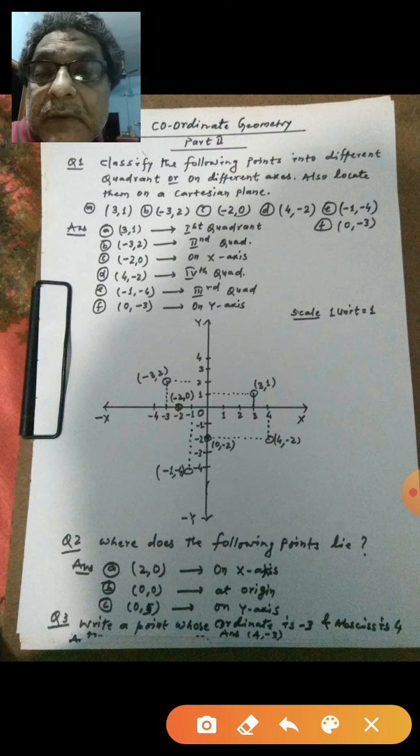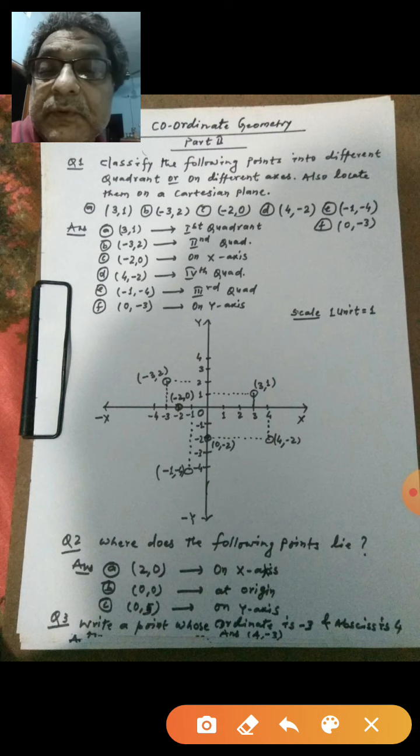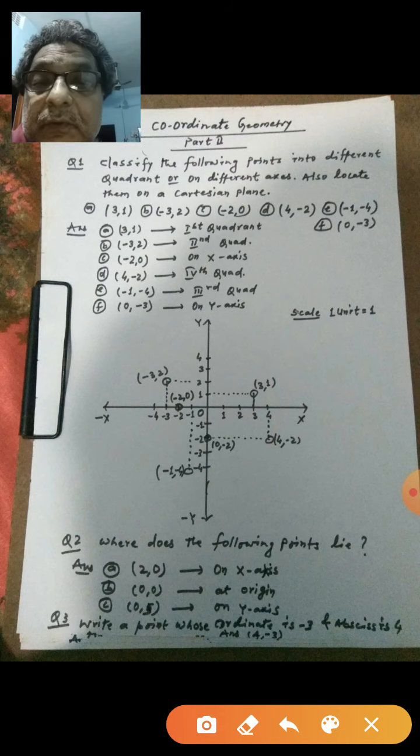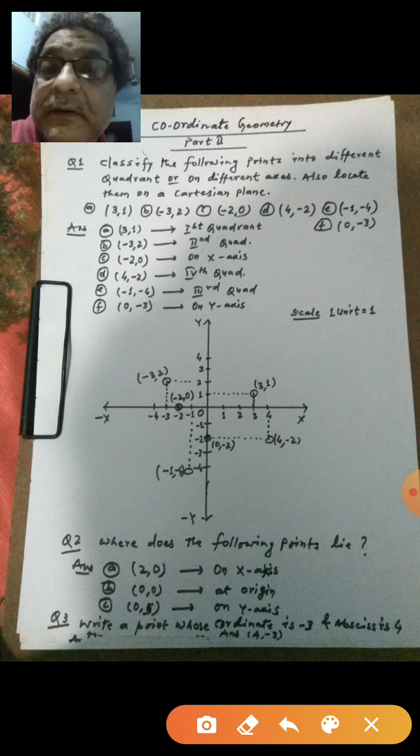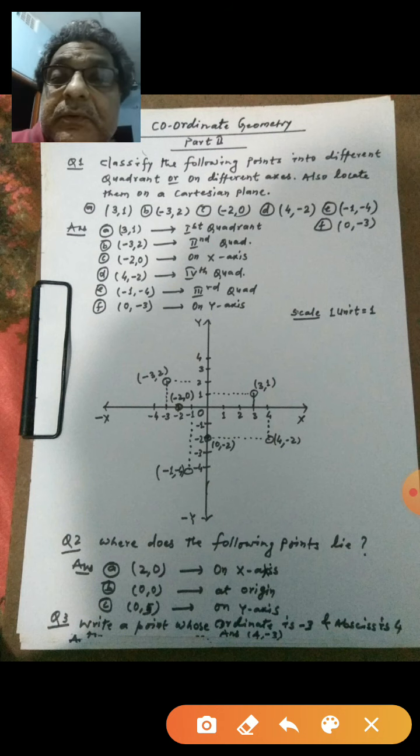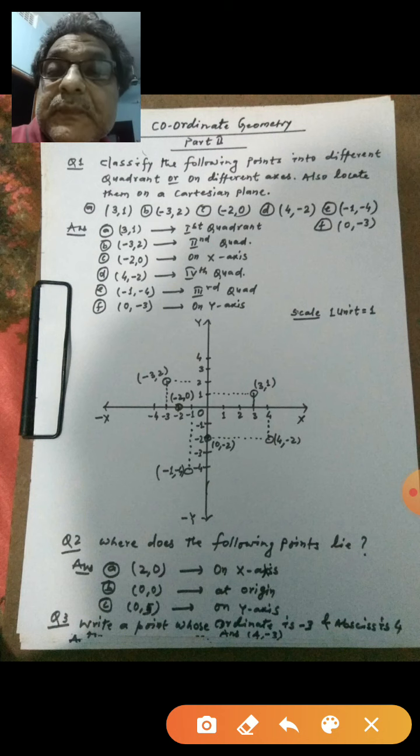Next is minus 1 comma minus 4, both negative. You know both negative belongs to third quadrant, so answer is third quadrant. Next is 0 comma minus 2, x coordinate is 0 so this goes to y-axis. So I think you have learned in a better way. Now to show the position of this point or to plot or to locate on a graph paper, on a Cartesian plane...